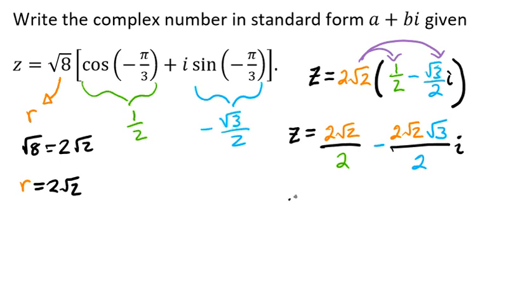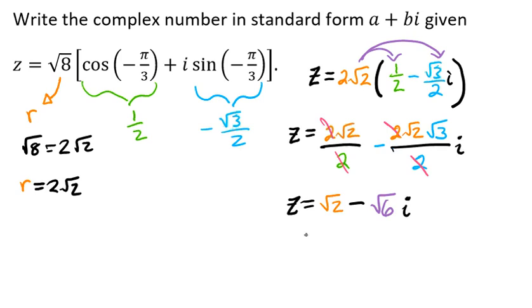When we simplify that, we see that we're able to cross out our 2's, and that gives us the square root of 2. Then a minus — and again we're able to cross out our 2's — and that leaves us with the square root of 6 times i. We usually write the i in front, so z equals the square root of 2 minus i times the square root of 6.